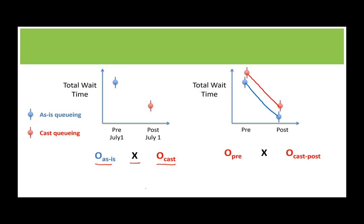How do we represent this in terms of our notation? We have an observation beforehand on some of our gates in the park, then we add CAS queuing at those gates, and then we observe them again. Similarly, for some of our other gates, we observe them ahead of time with normal line procedures, we don't implement CAS queuing at those gates, and then we observe them again to see the wait times with just the normal policy. Critically important is this R, which means that which gates get CAS queuing and which ones do not is randomly assigned.